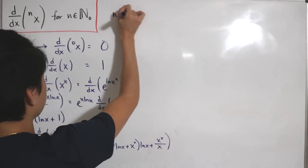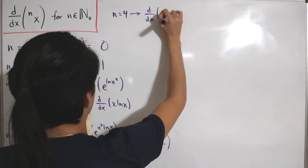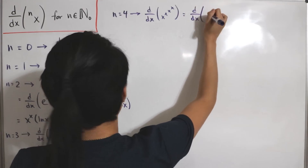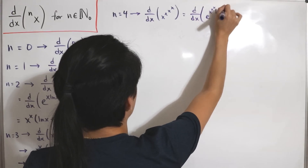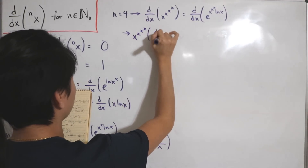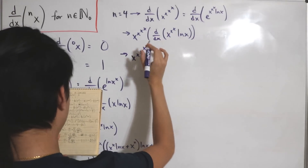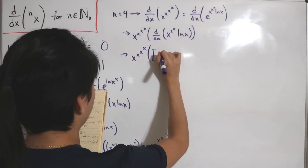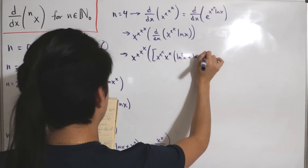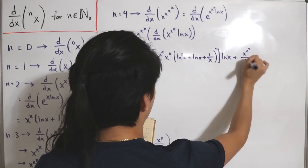For n=4, we differentiate x^(x^(x^x)). Writing as e^(x^(x^x)·ln x), the chain rule gives x^(x^(x^x)) multiplied by the derivative of x^(x^x)·ln(x). Substituting the known derivative of x^(x^x) and applying the product rule yields: x^(x^(x^x)) · [x^(x^x) · x^x · (ln²x + ln x + 1/x) · ln x + x^(x^x)/x].